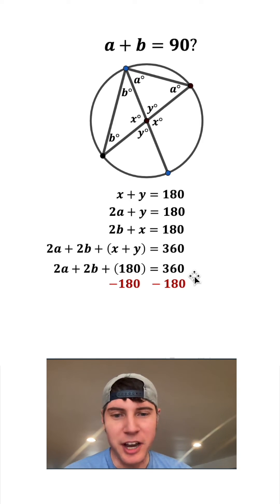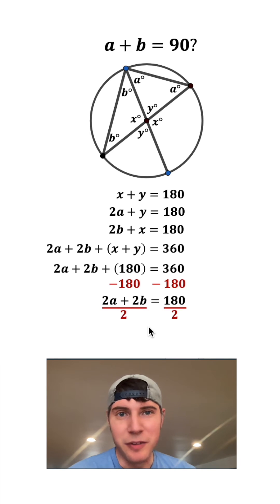We subtract 180 from both sides. 360 minus 180 is 180. This stuff goes away so we just bring down the 2A plus 2B. Scoot it over. We can divide both sides by 2. 2A plus 2B divided by 2, we divide each of these by 2, which gives us A plus B. And then 180 divided by 2 is 90.